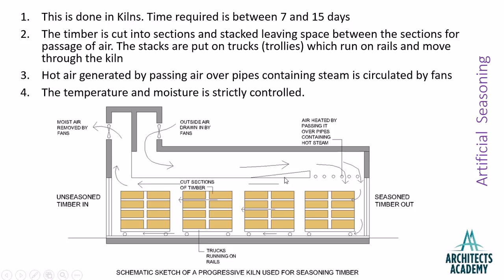As you can see here, the air from outside is drawn in and passes over pipes containing hot steam. Because of the fan, the moist air — which takes all the moisture from the timber — is drawn out from the other end. It is important to note that the temperature and moisture content in this case has to be strictly controlled. If the moisture reduces beyond a certain extent, some steam is released into the chamber so as to balance the moisture content.